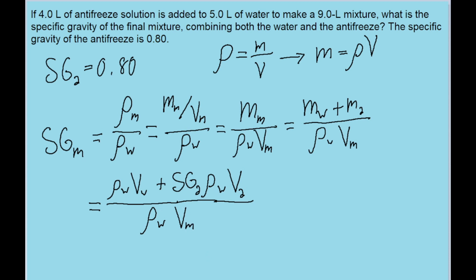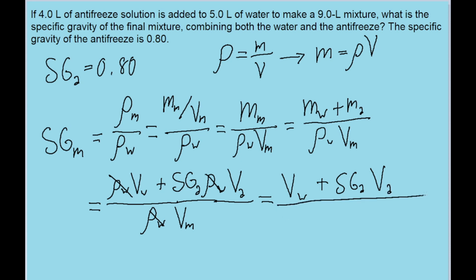We can do a little bit of simplifying here, because the rho sub w term appears in all three terms, so it can cancel out. We can simplify this expression down to the volume of the water, plus the specific gravity of the antifreeze times the volume of the antifreeze, all over the volume of the mixture.